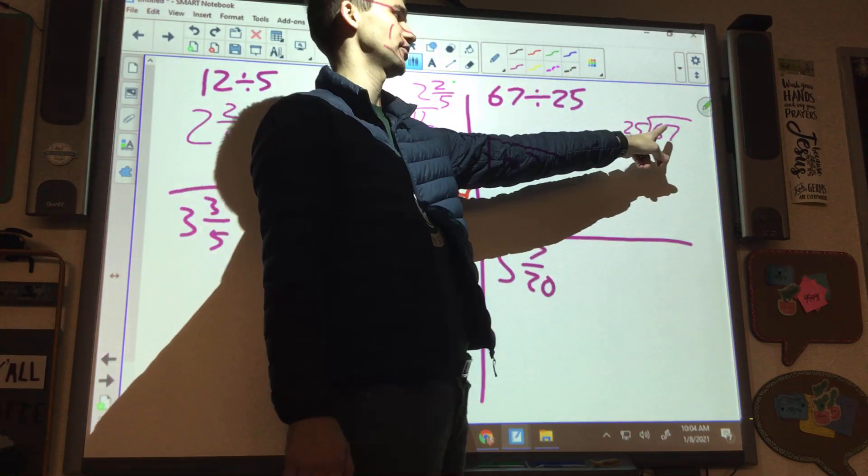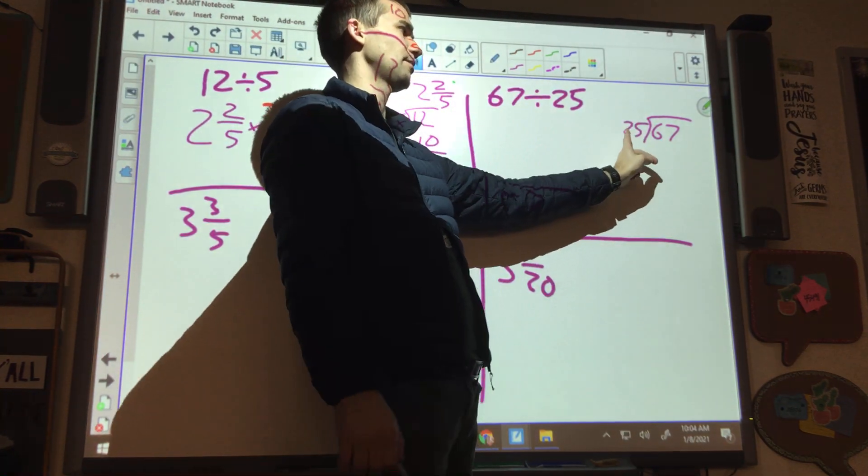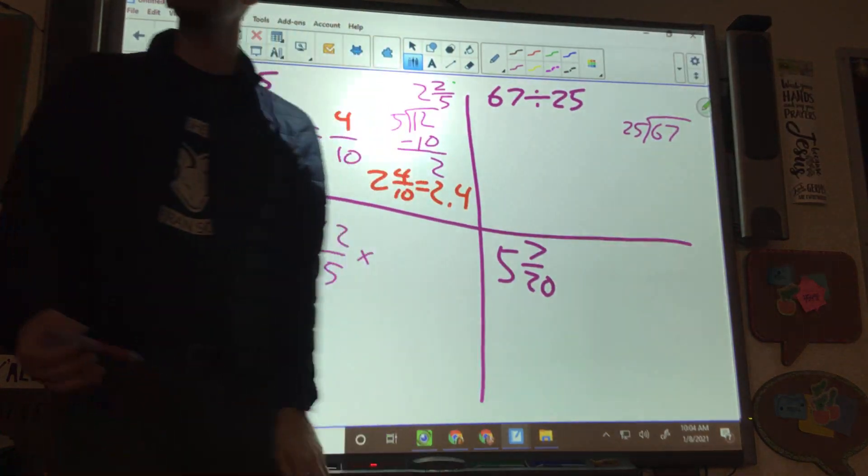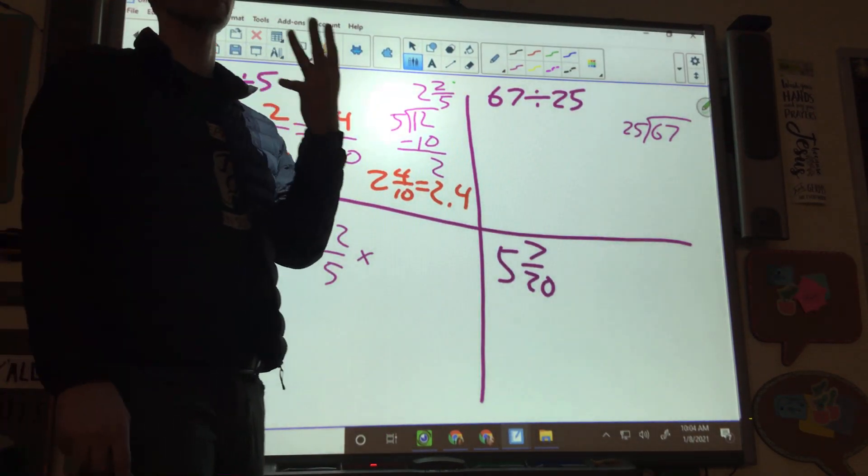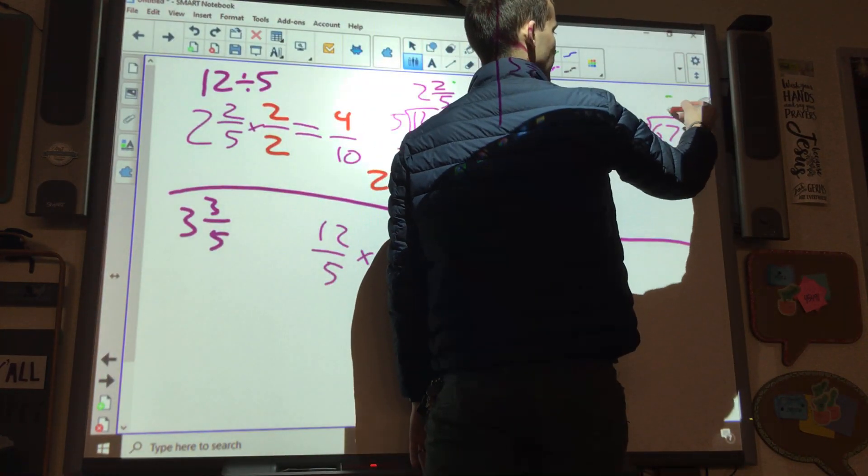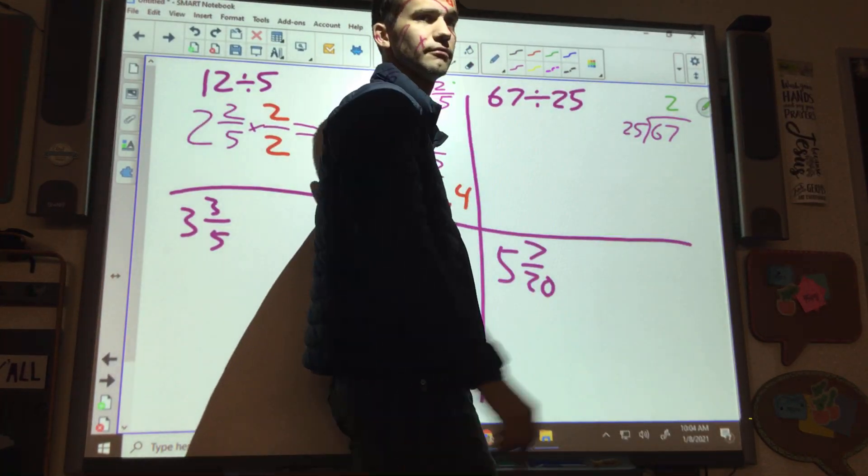So 67, we have to do long division. 67 divided by 25. 25 goes into 67 how many times? Twice. Twice, because three times it would become what? It would become 70. Yeah, not 70, 75. 75.